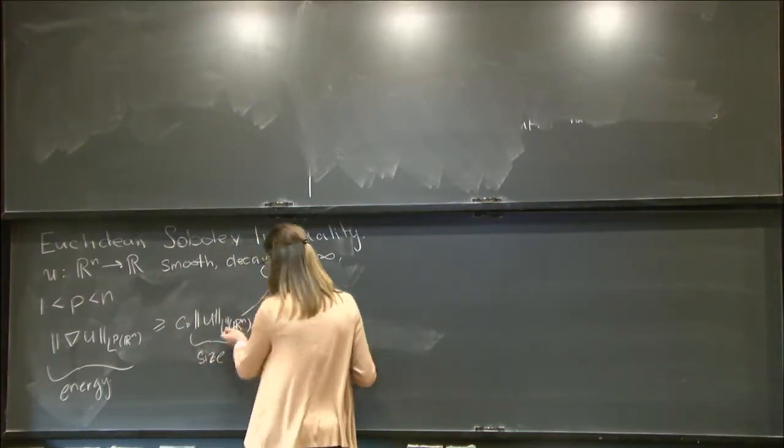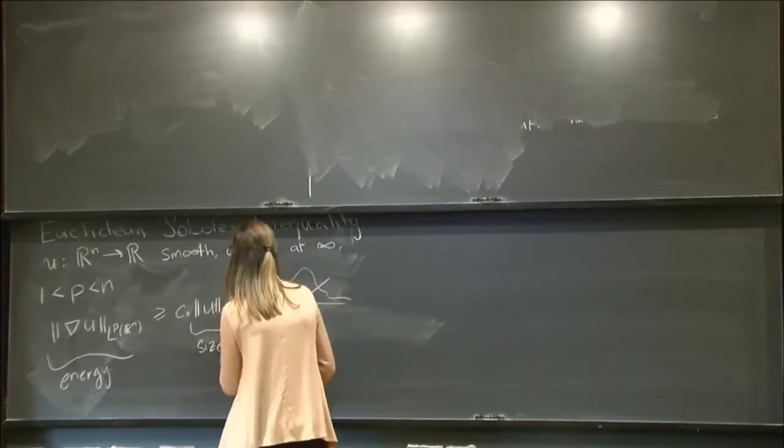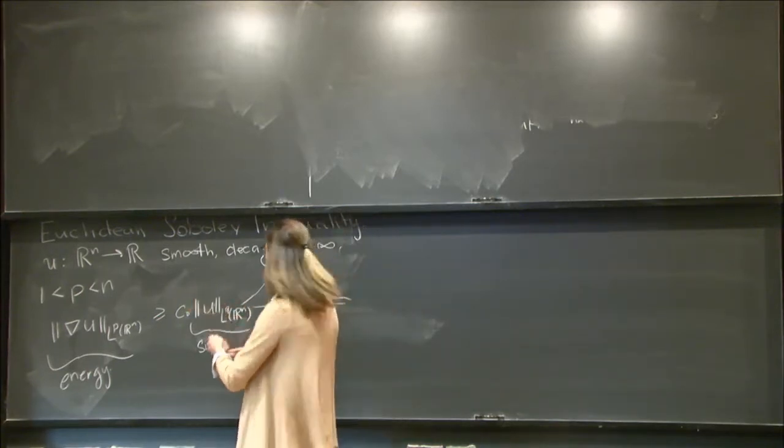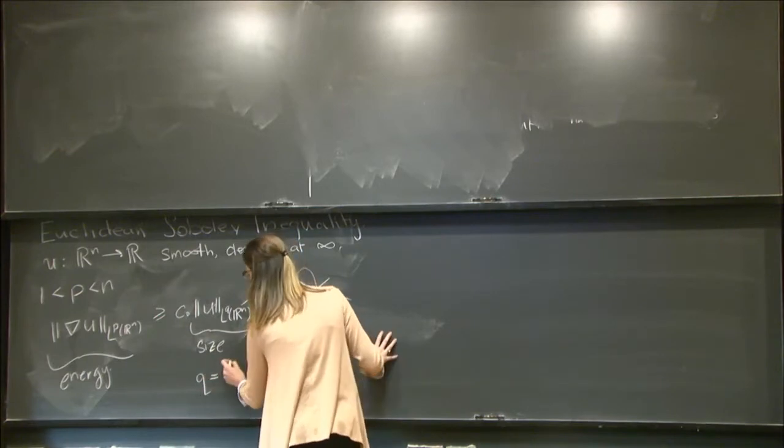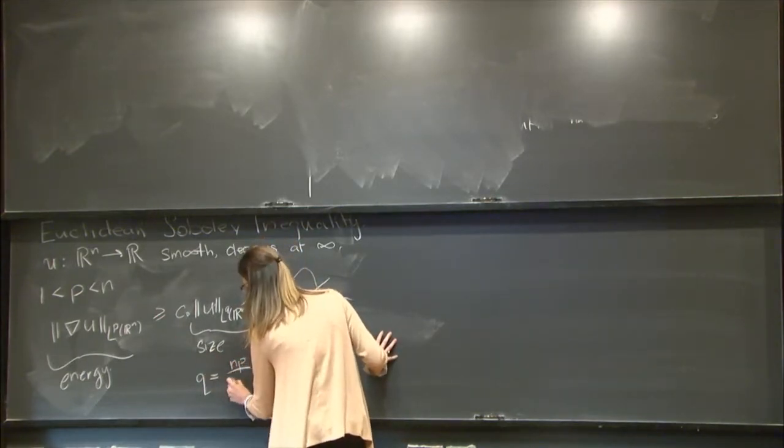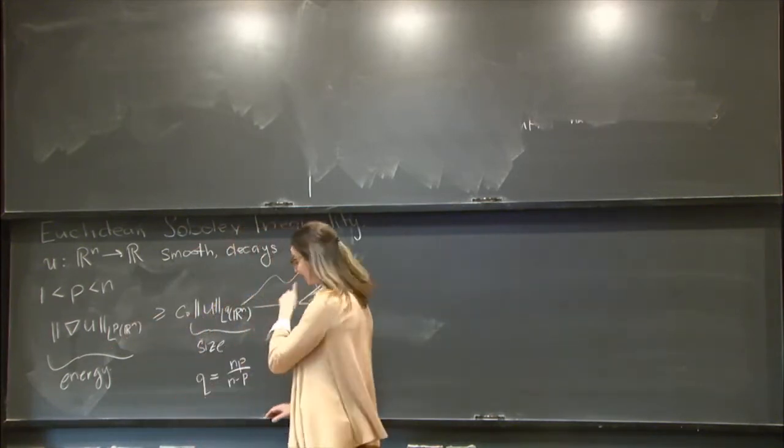the size of this function measured in another Lq space. So this is the size. These LP spaces measure the size of the function, and as you vary this value of p or q, it emphasizes where the function is small or large. The appropriate value that we have to put here is something that's specifically governed by the dimension and p.